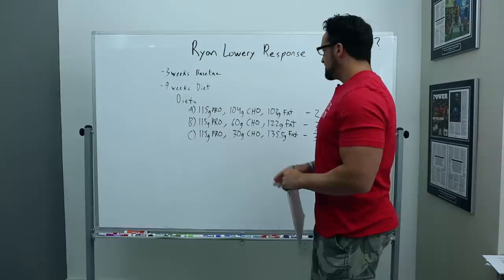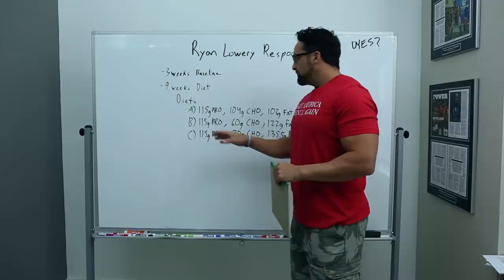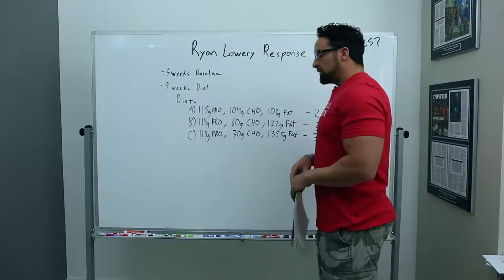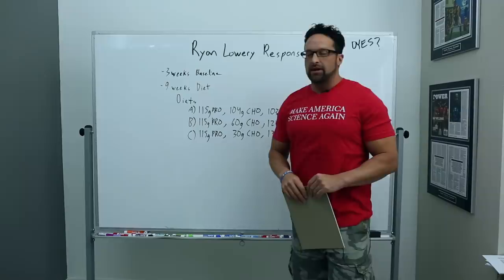And the diet groups were: A - 115 grams of protein, 104 grams of carbohydrate, and 103 grams of fat. B - 115 grams of protein, 60 grams of carbohydrate, 122 grams of fat. And C - 115 grams of protein, 30 grams of carbs, 135.5 grams of fat. Calorie equated, protein equated.